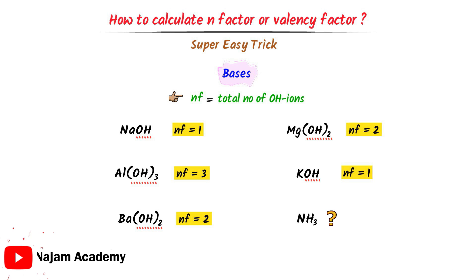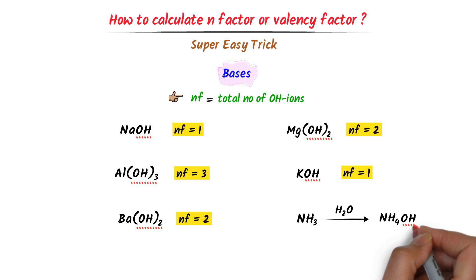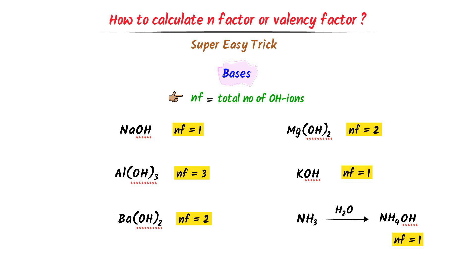What about the n-factor of ammonia? We already know that ammonia is a base, but it doesn't contain any hydroxide ion. So as usual, we will add water to it. As a result, we get ammonium hydroxide, which contains only one hydroxide ion, so its n-factor is 1. Thus, remember that the n-factor of NH3 is 1. Therefore, the n-factor of any base is equal to its total number of hydroxide ions.